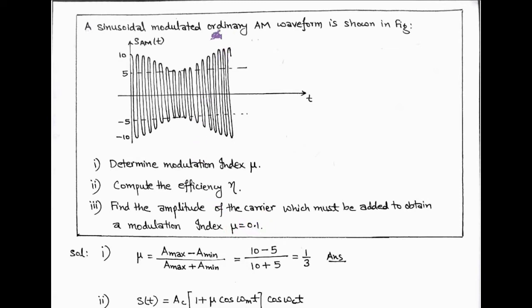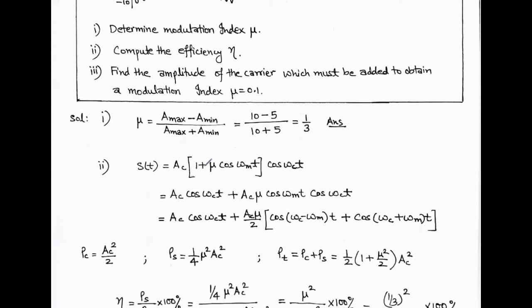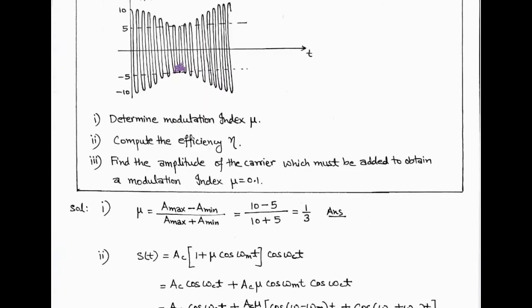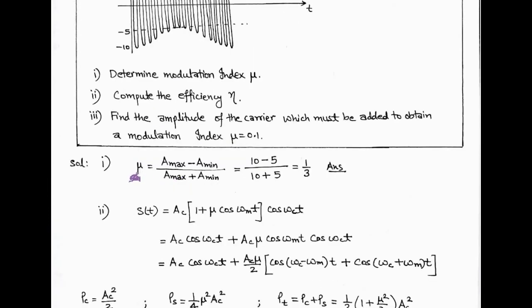According to the question, the envelope of standard AM is given. Using this, we first find the modulation index mu using the formula: mu equals (A_max minus A_min) upon (A_max plus A_min). Here the maximum value is 10 and the minimum value is 5. So the modulation index is 1/3. From the figure, we determine the modulation index according to the formula and it is equal to 1/3.